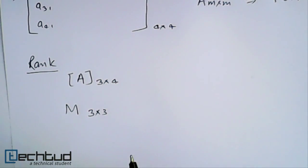We will check all the possible 3 by 3 minors, and if we have at least one 3 by 3 minor which is not equal to 0, then we will say that the rank of matrix A is equal to 3.